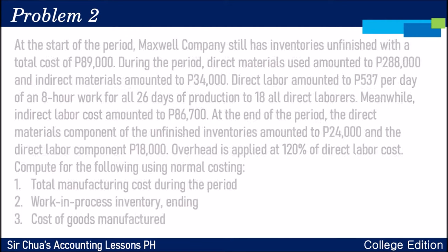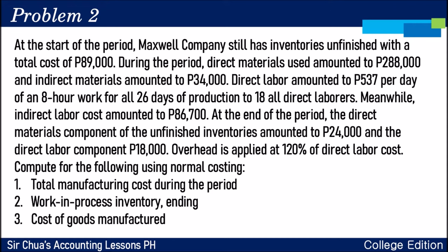Problem number two: At the start of the period, Maxwell Company still has unfinished inventories with a total cost of $89,000. During the period, direct materials used amounted to $288,000 and indirect materials is $34,000. Direct labor is $527 per day — that's the minimum wage in NCR for 2020 — for an 8-hour workday, all 26 days of production, for all 18 direct laborers. Indirect labor cost is $86,700. At the end of the period, the direct materials component of unfinished inventories is $24,000 and direct labor component is $18,000. Overhead is applied at 120% of direct labor cost.